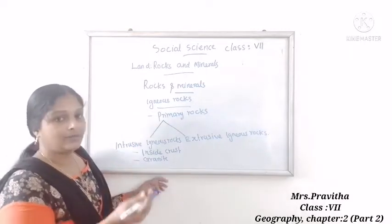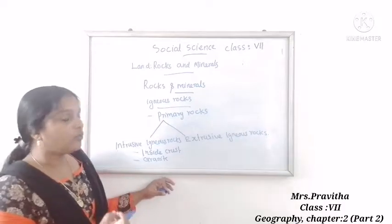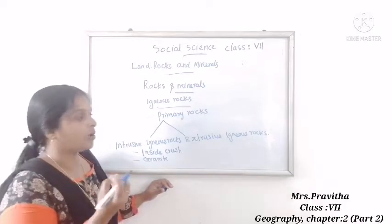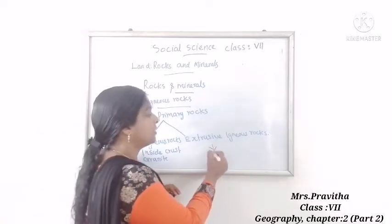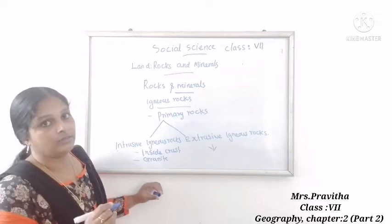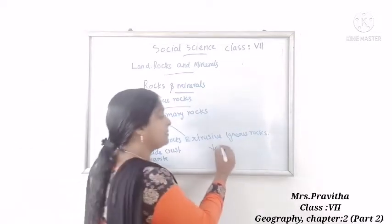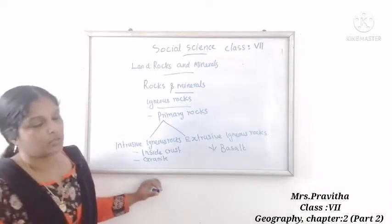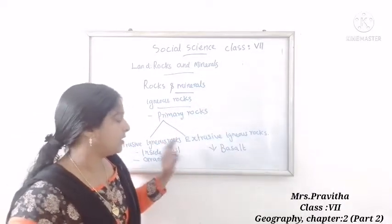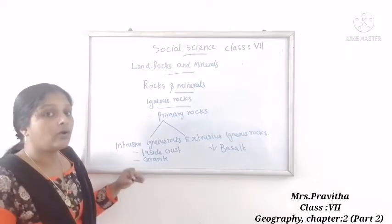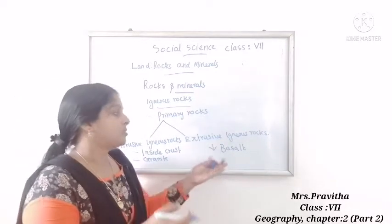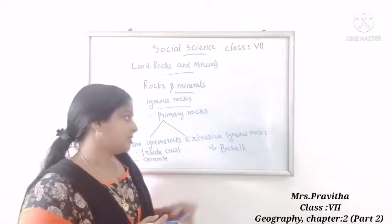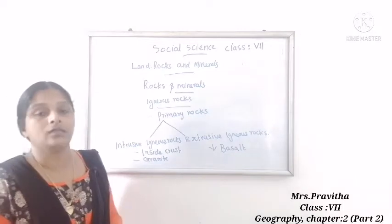Now, what is extrusive igneous rock? When the molten magma comes out from the earth's surface, it will cool down and change into rock — that is known as extrusive igneous rocks. Example: basalt. Basalt is an example of extrusive igneous rock. Intrusive igneous rock cools down inside the crust; extrusive igneous rock cools down outside the crust.